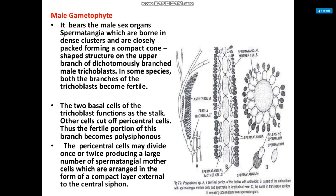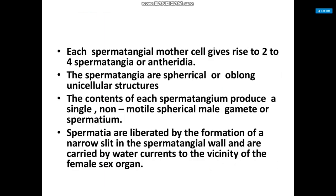These figures show: (a) a terminal portion of the thallus with anthridium, (b) a part of the anthridium with spermatangial mother cells and spermatangia in longitudinal view, (c) the same in transverse section, and (d) release of spermatia from the spermatangium. Each spermatangial mother cell gives rise to two to four spermatangia.